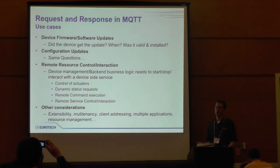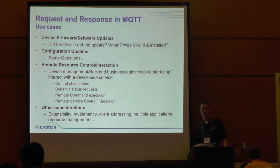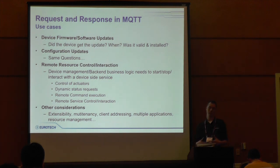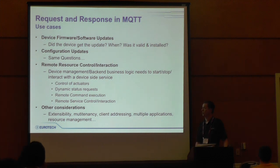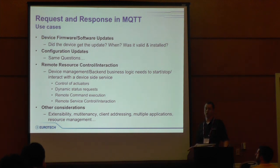There are many times when this is necessary. For example, when you want to send updates to many devices in the field, you want to know if the update got to the devices and if there was an error — what the error was — so you can update your backend to either resend the event or send a technician out to fix the problem. The same applies for configuration updates, control of actuators, and requesting the current configuration from a device. When designing the topic space you also need to consider extensibility, multi-tenant separation of individual customers, addressing specific devices, and potentially supporting multiple applications.